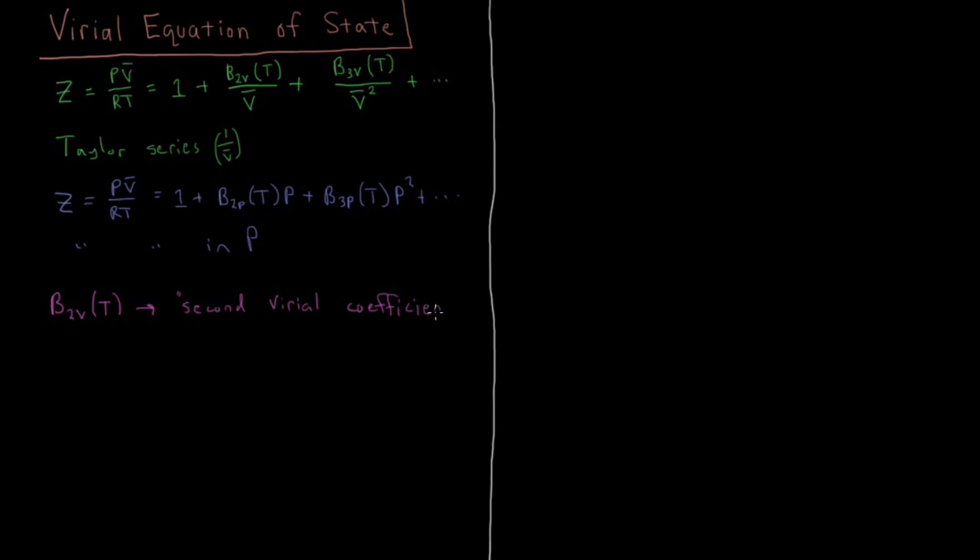So it turns out that this second virial coefficient is actually quite important. And what determines it is going to be how any pair of the gas molecules interact with each other. So it's determined by the interactions between the molecules. Now we could define some function as a distance of how far these molecules are apart. We could say U of R, a potential energy function, and we could say that that equals just the interaction between a given pair of the gas molecules.